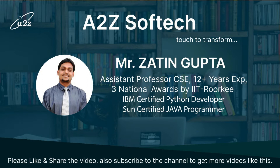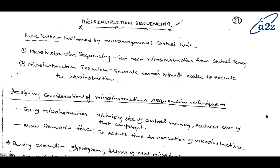You can find our videos using hashtag Zatin Sir, hashtag A2Z Soft Tech. Now let's start with the topic. Today we are discussing about micro instruction sequencing. Earlier we have discussed about instruction, instruction format, types of instruction, type of control unit. There are two types of control unit: hardware and micro programmed.